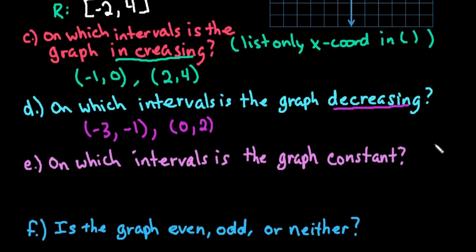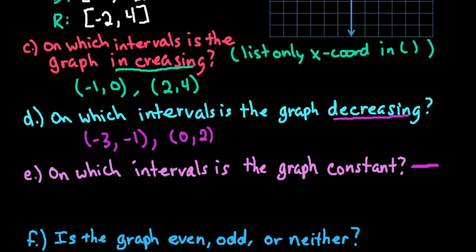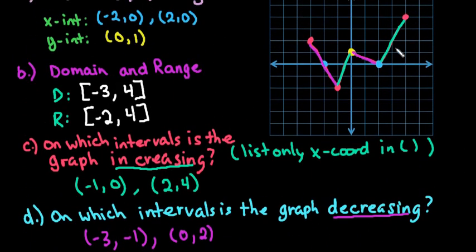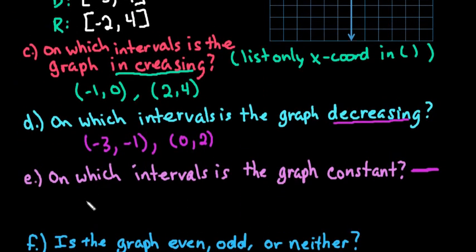On the next one, for a constant function, you're looking for a part in your graph that is just a flat line, where it stays constant. Your y-coordinates stay constant. And if I look up here, there are no places that my graph, it's either decreasing or increasing. So there are no intervals where the graph is constant. So we would just put that there are none.